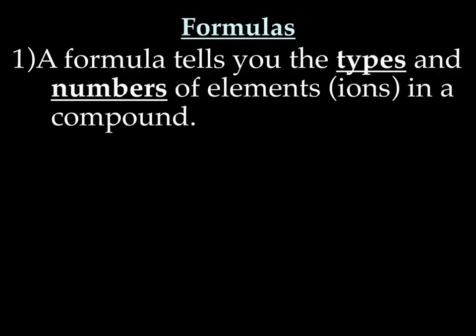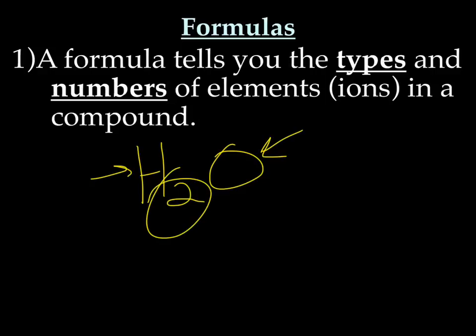Let's talk about formulas. First, a basic definition of a formula. A formula is something that tells you both the type and the number of elements or ions in a compound. You guys all know at least one formula - the formula of water. What's the formula of water? H2O. So this formula tells you that water is made up of hydrogen and oxygen. Further, it tells you that there are two hydrogens and one oxygen. So again, a formula tells you both the type and the number of elements or ions in a compound. And a compound is two or more atoms hooked up.